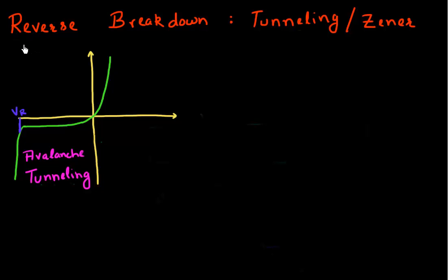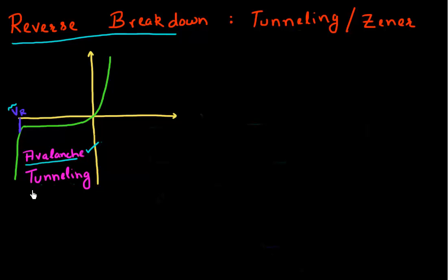We were having this conversation about reverse breakdown in a p-n junction. We talked about two processes that could possibly cause this. The very first was the avalanche of carriers — avalanche of electrons or holes — which could cause this reverse breakdown. But there's another process which can cause this reverse breakdown as well, and that's called tunneling. The diode which utilizes this process is called a Zener diode, named after Mr. Clarence Zener who discovered this phenomenon first.